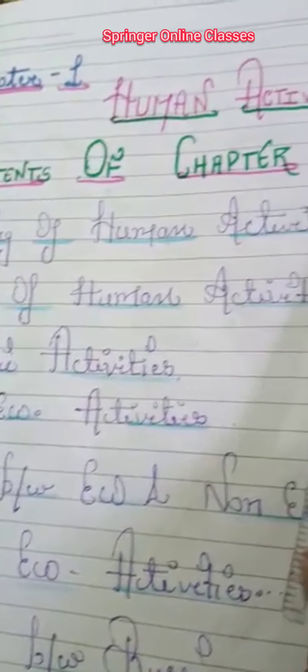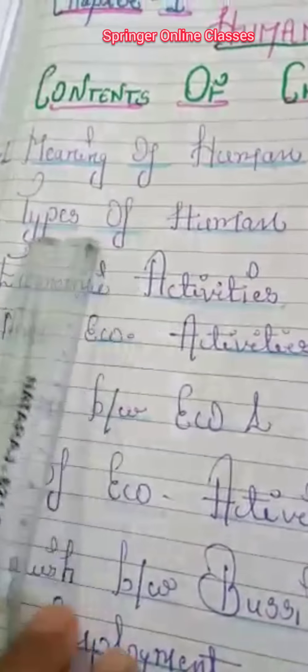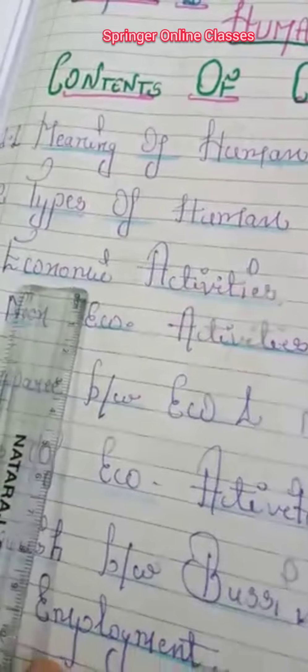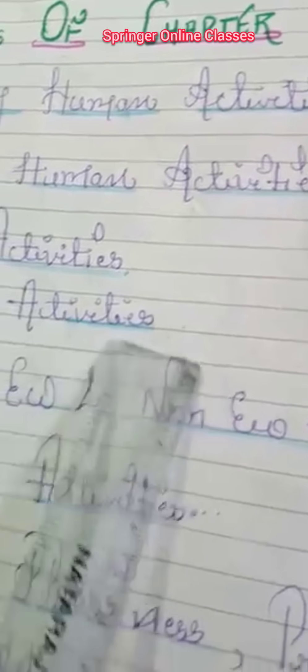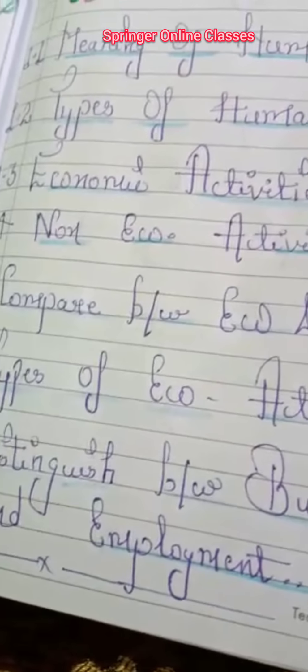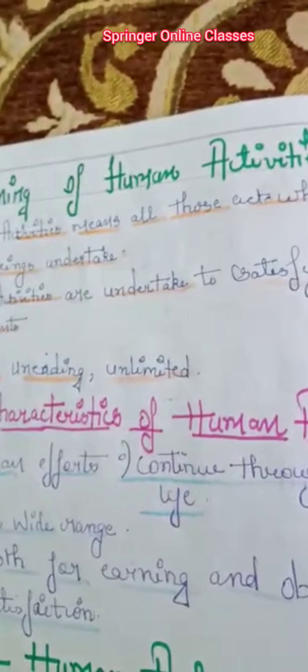First of all, we should go through the contents of this chapter. The chapter contents are its meaning, types — Economic Activities and Non-economic Activities — these are the two main types, then the comparison between these two activities, and distinction between business, profession and employment. You must know about these Human Activities.